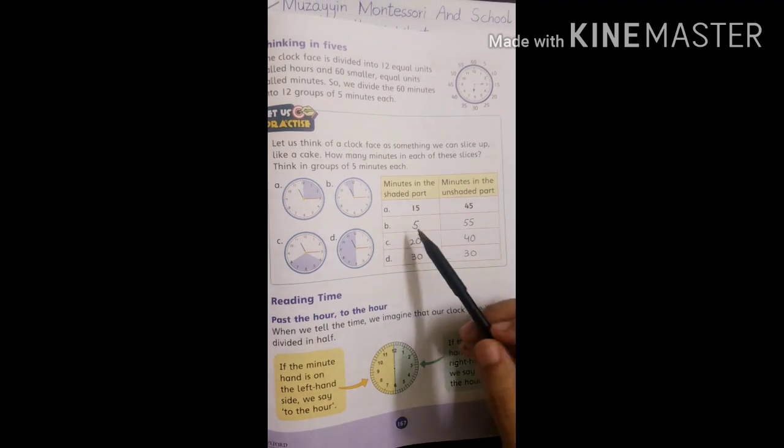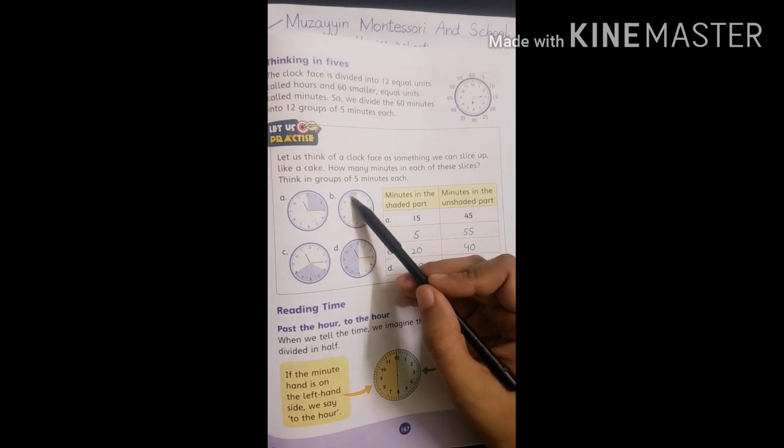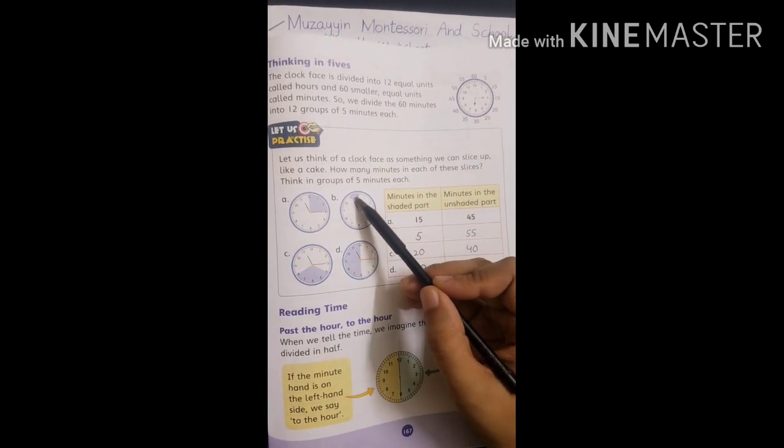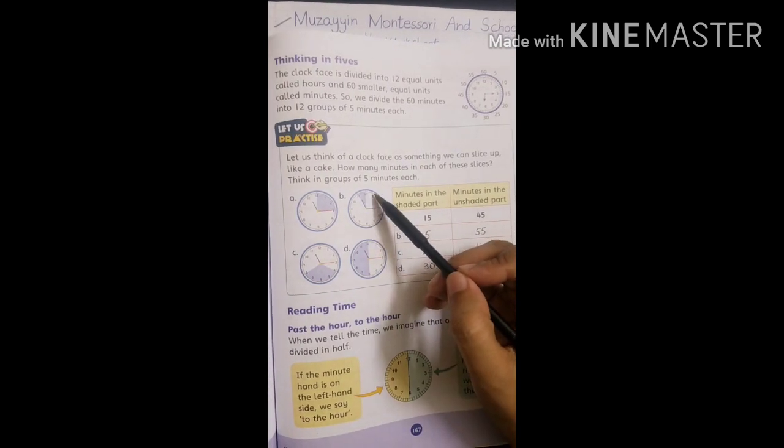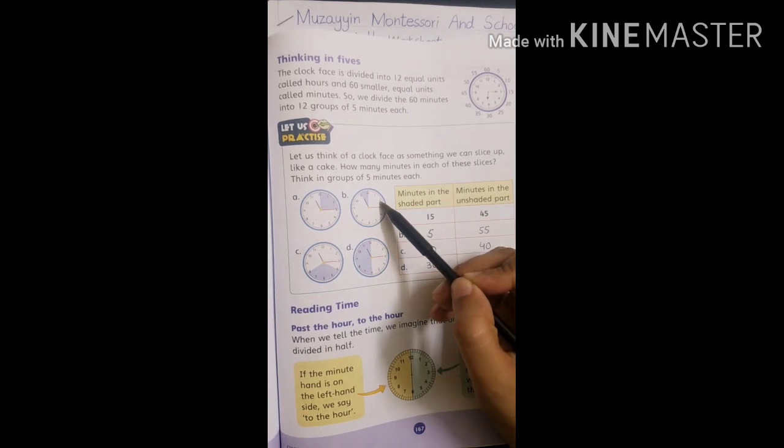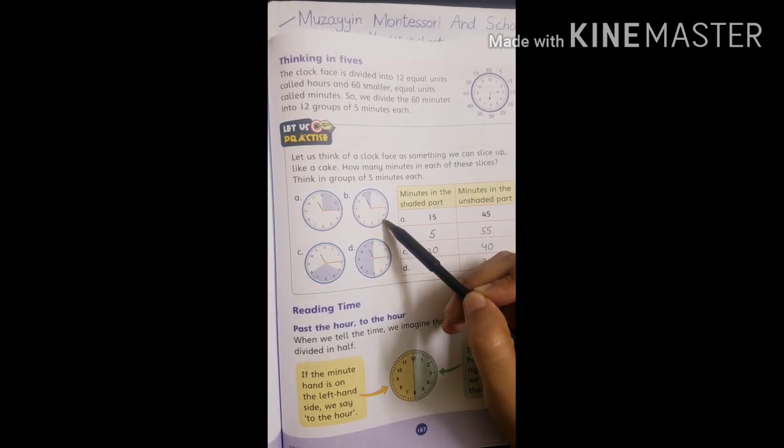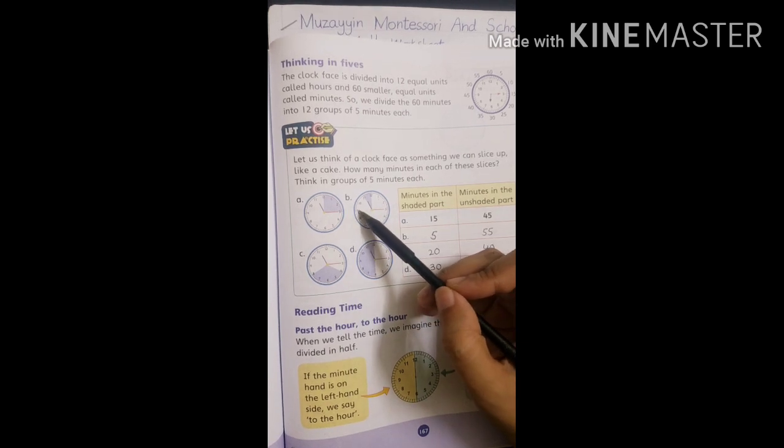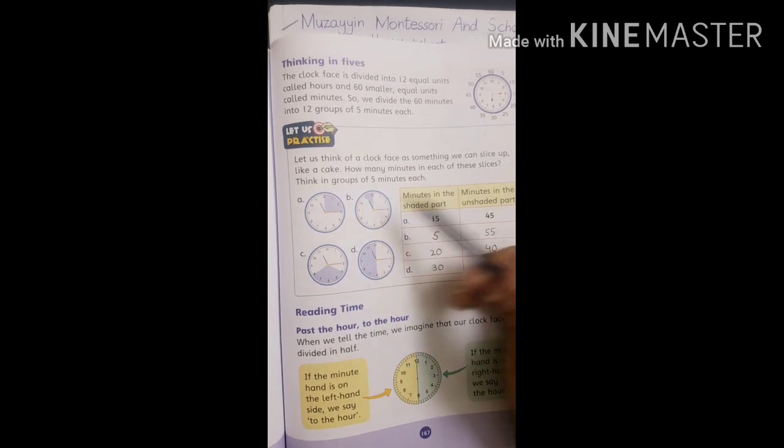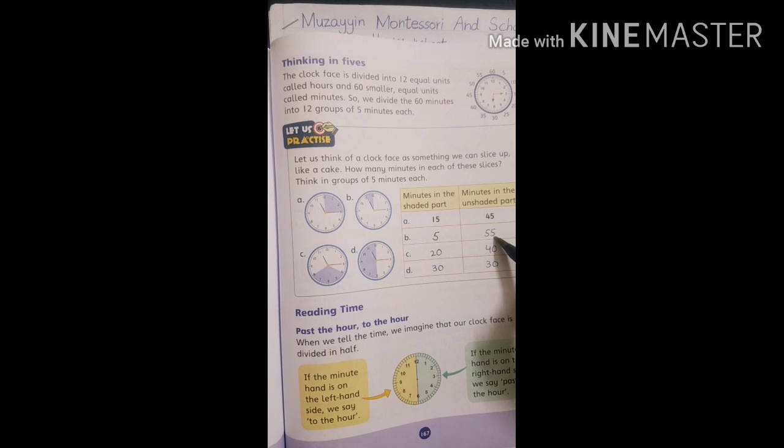Part B: Shaded part is 11 to 12, which is 5 minutes. Unshaded part: 12 to 1 is 5 minutes, then 10, 15, 20, 25, 30, 35, 40, 45, 50, 55. Unshaded part has 55 minutes.